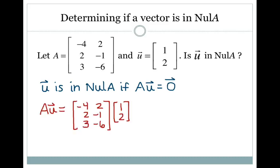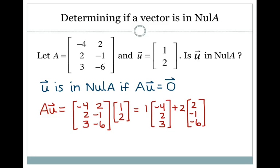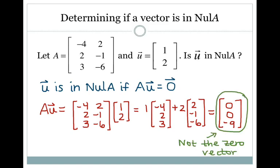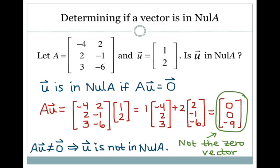We're going to multiply A times U — matrix on the left, vector on the right — and the vector provides the weights for the columns of A. So I get 1 times the first column of A plus 2 times the second column of A, and adding across I get the result 0, 0, negative 9. This is not the zero vector, so AU is not equal to the zero vector, meaning U is not in the null space of A.